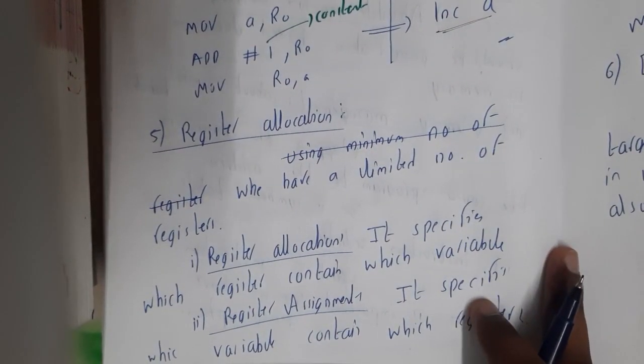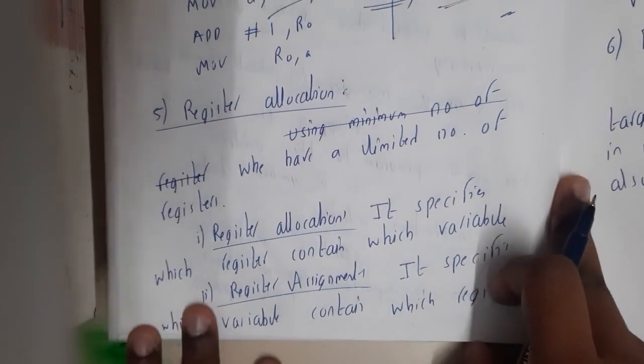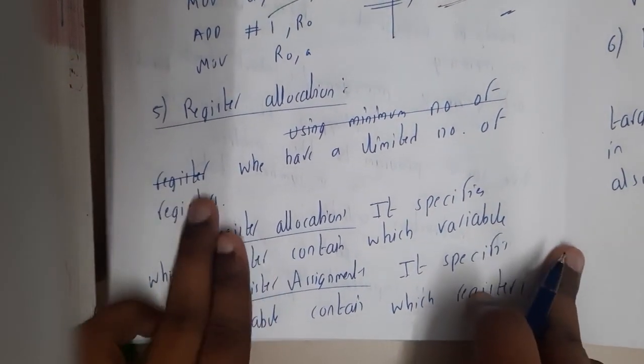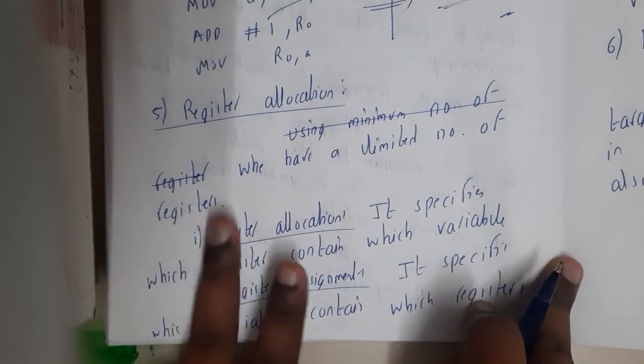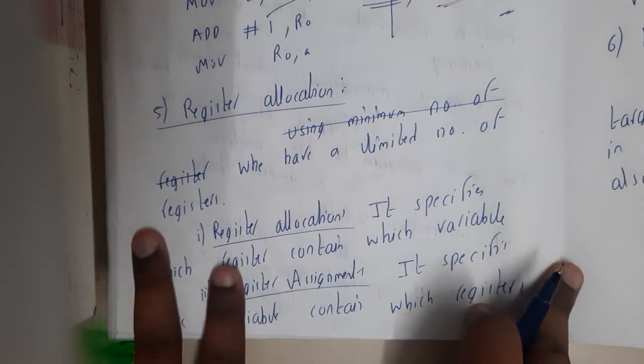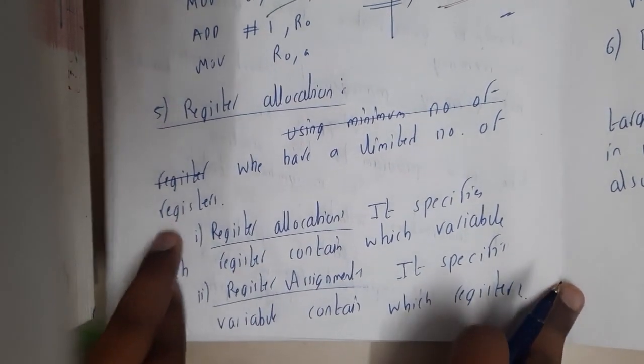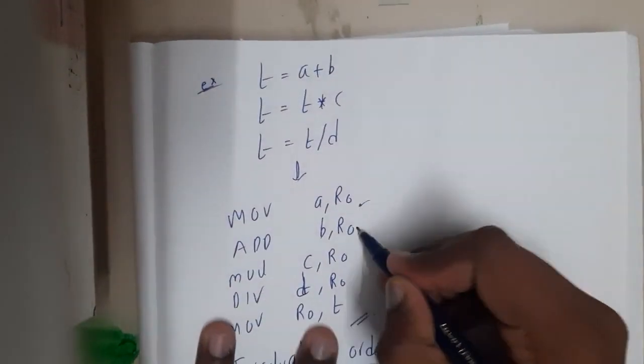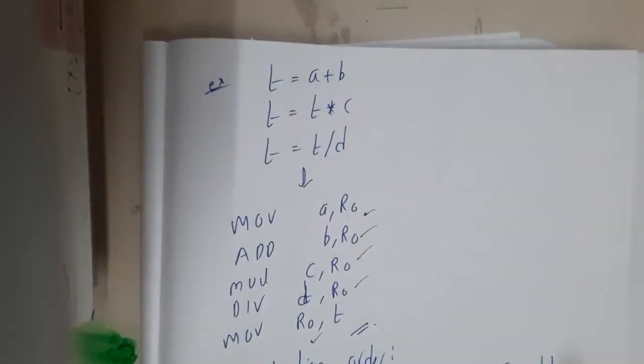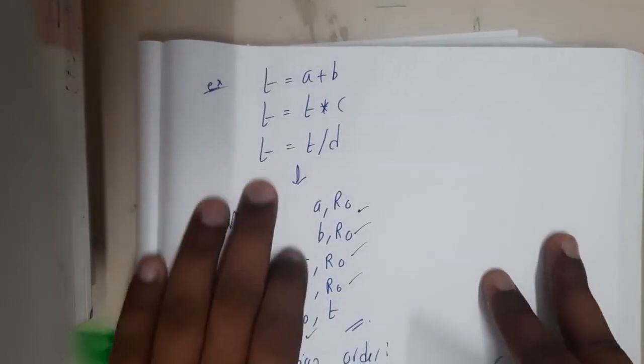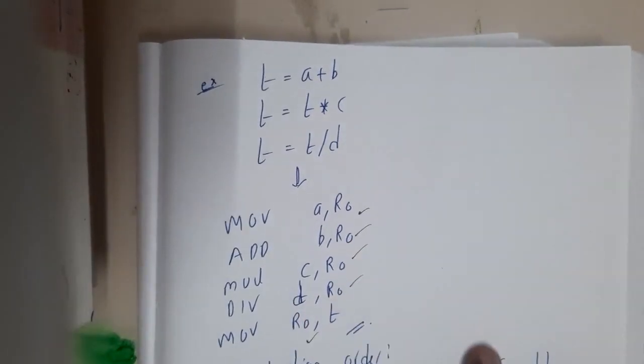Register allocation - we have a very limited number of registers. When we need to reallocate the registers and when we need to use those registers is really important. Register allocation and register assignment play an important role. Here we used only single R0 and did the required calculation instead of using temporary variables.